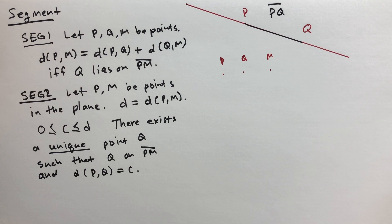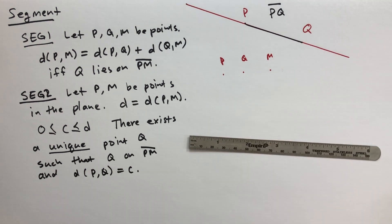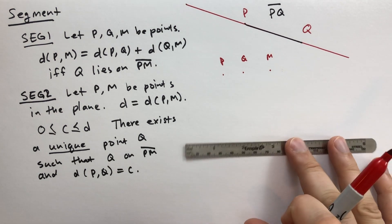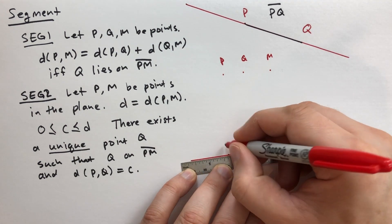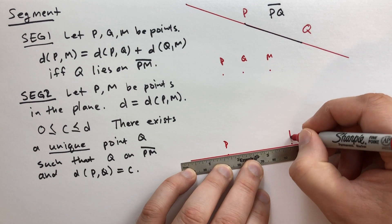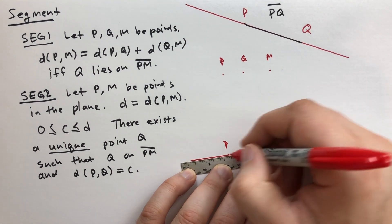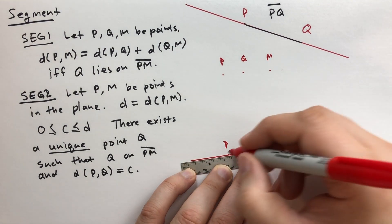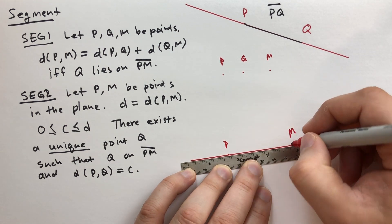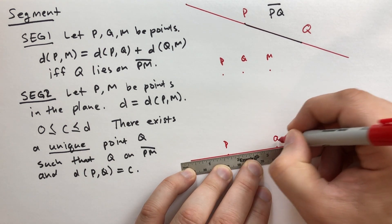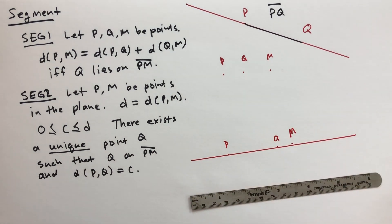So what we're saying here is we have two points, P and M. Let's draw a line. We have a point P, and we have point M, and the line segment is the points between here, right? If we choose any point between P and M, including P and M itself, let's call that Q. So Q is some point on that line segment.